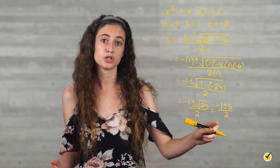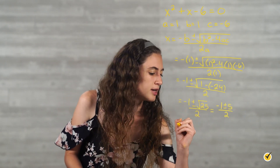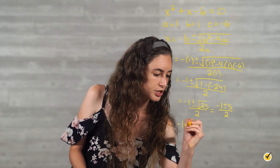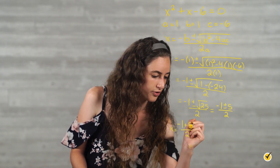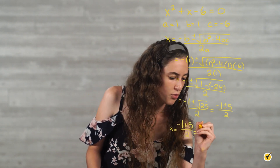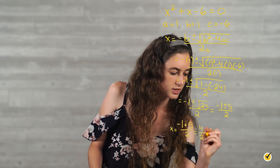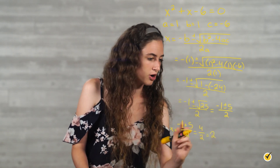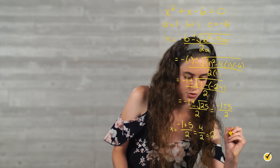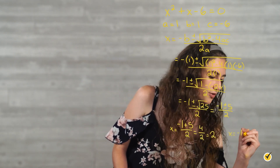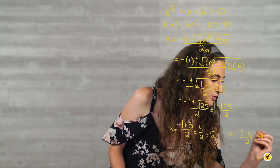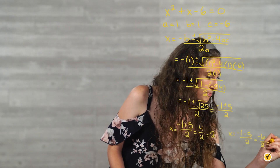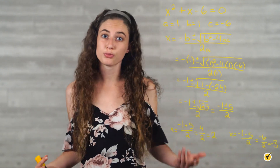Now we're going to break this into two different equations. So we're going to have x is equal to negative 1 plus 5 over 2. Negative 1 plus 5 is 4 over 2, which is 2. And then for our other value of x, we're going to do x is equal to negative 1 minus 5 over 2. Negative 1 minus 5 is negative 6 over 2, which is negative 3. So the roots for this quadratic equation are 2 and negative 3.